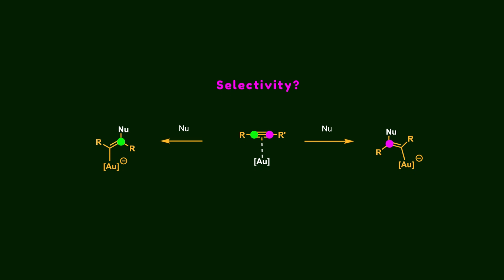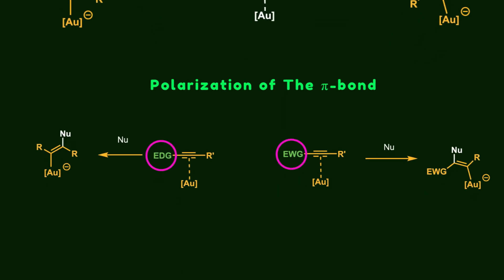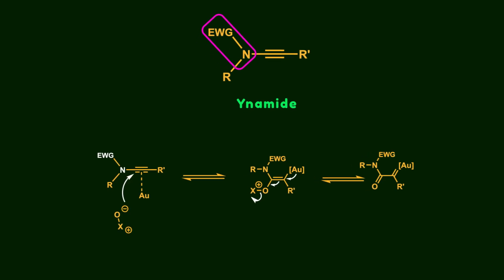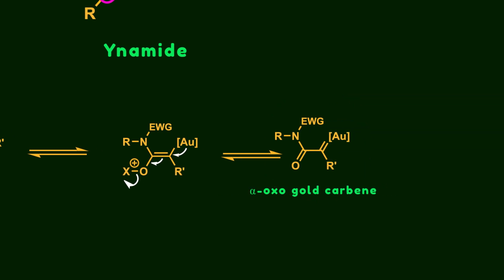In recent years, a key strategy to control selectivity has been the polarization of the pi bond by installing electron-withdrawing or electron-donating groups on the pi system. Treatment of this activated pi bond with gold has led to high selectivity. Ynamides are useful substrates that act as donating groups for controlling the selectivity of these reactions. In these compounds, a nitrogen bearing an electron-withdrawing group such as mesylate is attached to the alkyne to moderate the reactivity of the nitrogen atom. In the presence of a nucleophile like N-oxide or sulfoxide derivatives, the carbon atom adjacent to the nitrogen is attacked by the nucleophile, leading to the formation of alpha-oxo-gold carbenes — highly reactive species that can be utilized in further transformations.